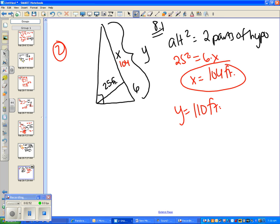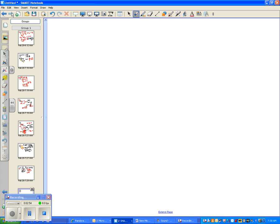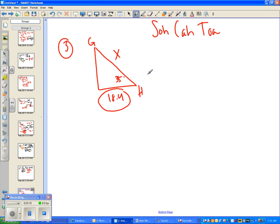Number 3, I'm pretty sure most people got this one correct. It just wanted you to find GH, which is the hypotenuse. So you want to figure out what the hypotenuse is. They give you 35 degrees, and they tell you that this side is 18.4, so you have to figure out if you're going to use sine, cosine, or tangent.